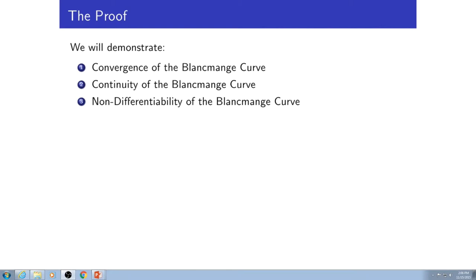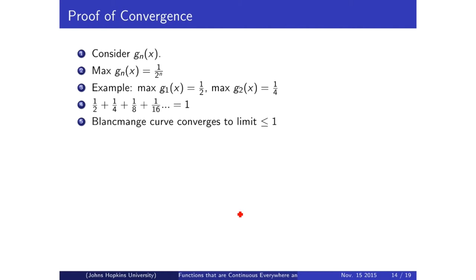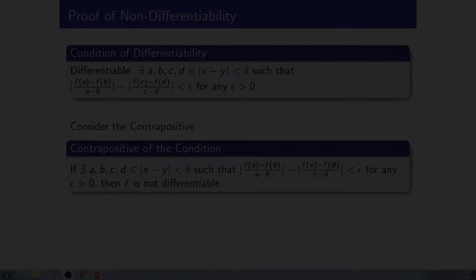We're going to prove that the Blancmange curve is both continuous everywhere and non-differentiable everywhere. We'll start by proving convergence, because the easiest way to prove continuity is to prove convergence. The max of any individual g of n is 1 over 2 to the n. So the max of g0 is one half, g1 is one fourth, and so on. When you add one half plus one fourth plus one eighth plus one sixteenth for an infinite number of iterations, that comes out to 1. So the Blancmange curve converges to a limit of less than or equal to 1, and therefore it is converging — proving continuity.